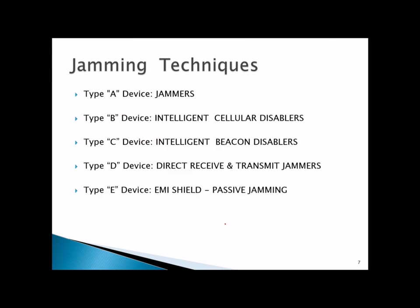There are various jamming techniques categorized as Type A, B, C, D, and E. Type A are jammers. Type B are intelligent cellular disablers. Type C are intelligent beacon disablers. Type D are direct receive and transmit jammers. Type E are EMI shields or passive jamming, where EMI stands for electromagnetic interference.